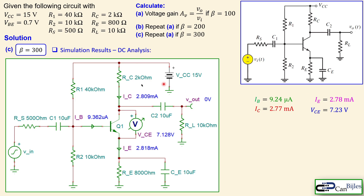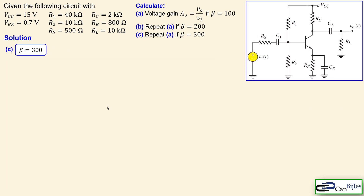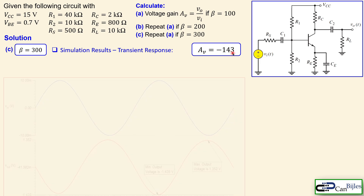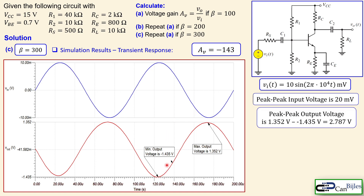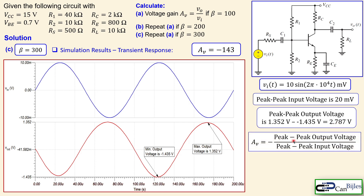DC analysis for beta equal to 300 shows the simulated VCE approximately 9.36 V and collector current approximately 2.81 mA, very close to our calculated 2.77 mA. In the transient response, calculated gain is minus 143. The blue line is input, red line is output, again inverted. Input is 10 mV peak at 10 kHz. The peak-to-peak output from the plot is 2.787 V, giving a simulated gain of minus 139, very close to the calculated minus 143.